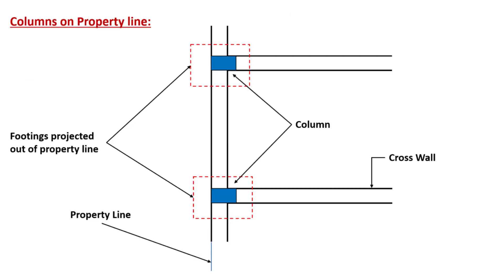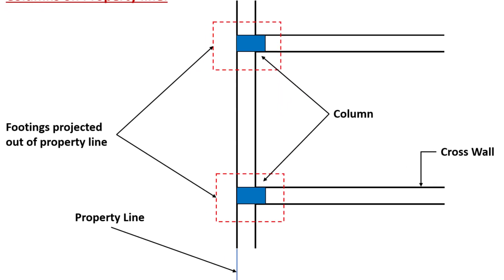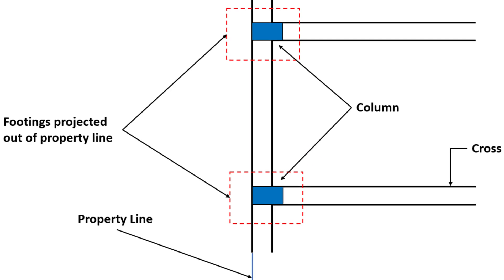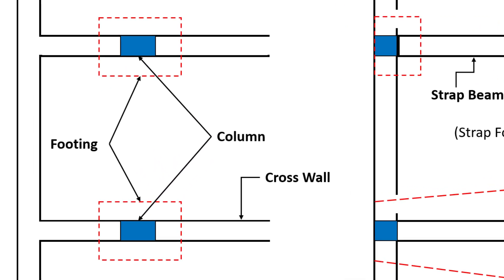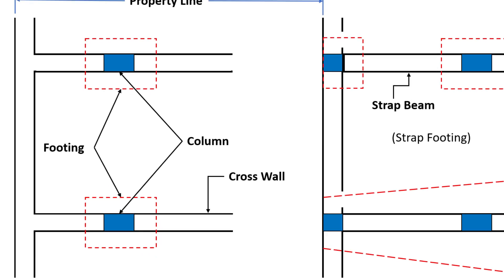However, in certain exceptional cases, it may not be feasible to place a column at the junction of walls, such as when the column is located along the property line. This can pose challenges in providing footing for such columns due to space limitations. To overcome this, the columns can be shifted inward along a cross wall to accommodate the footing within the property line as depicted in this picture.